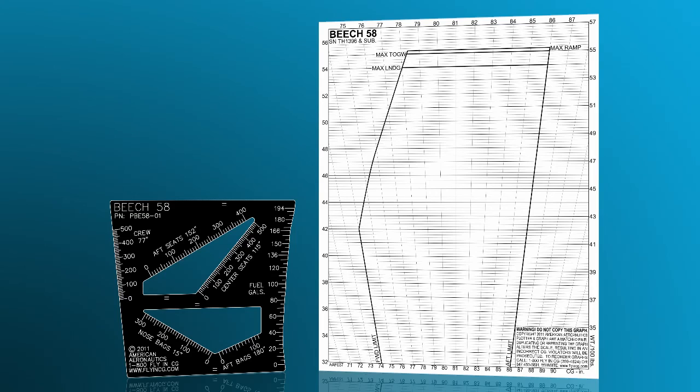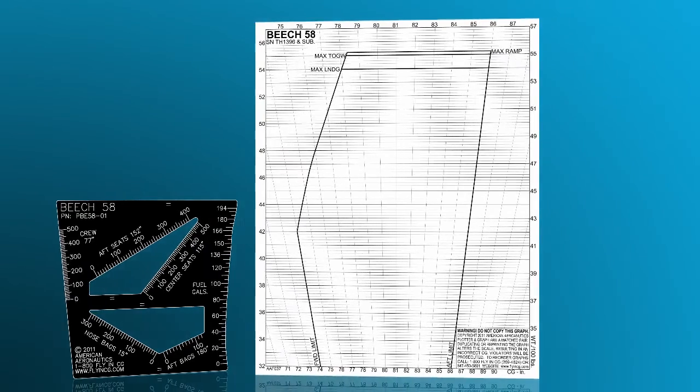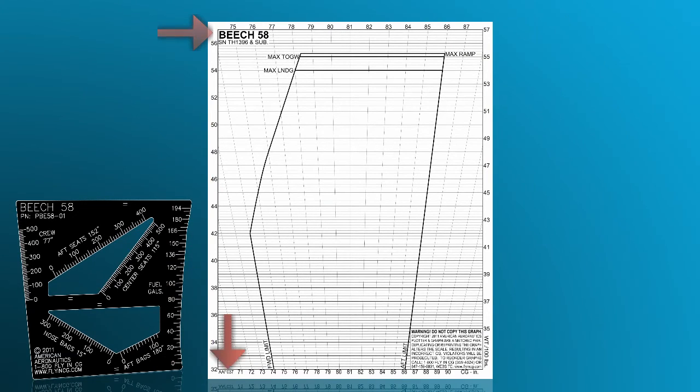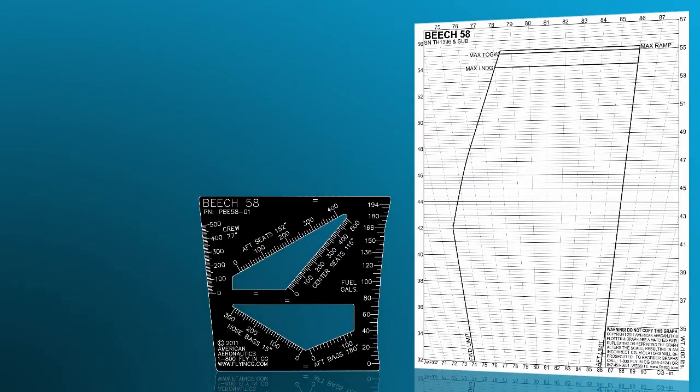The vector method is made up of two parts: the paper graph, which indicates the weight of the aircraft vertically and the center of gravity horizontally, shows the aircraft's center of gravity envelope for your aircraft. And there's the aluminum plotter, which has the weight scales for each loading position in the aircraft.